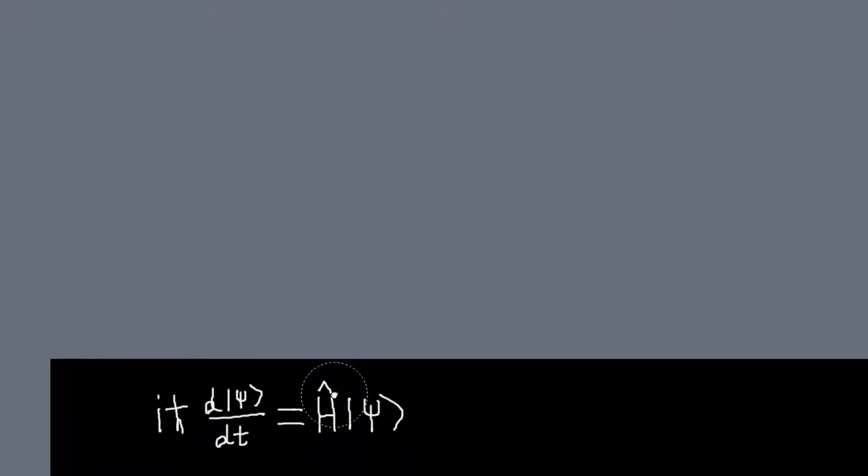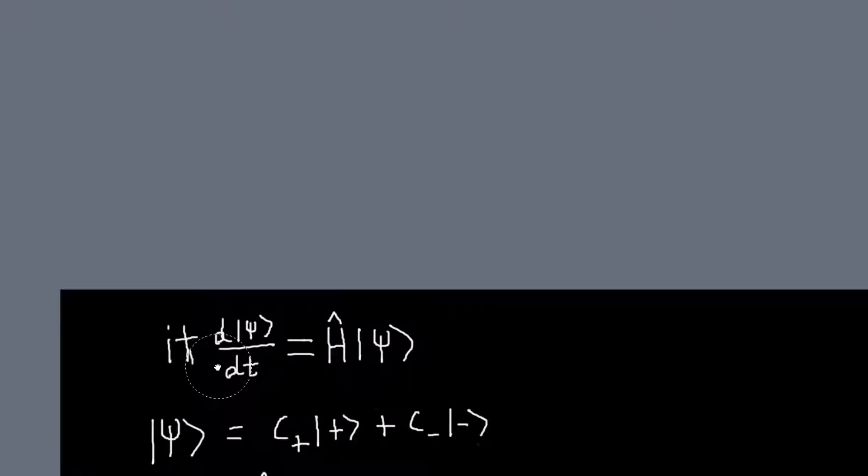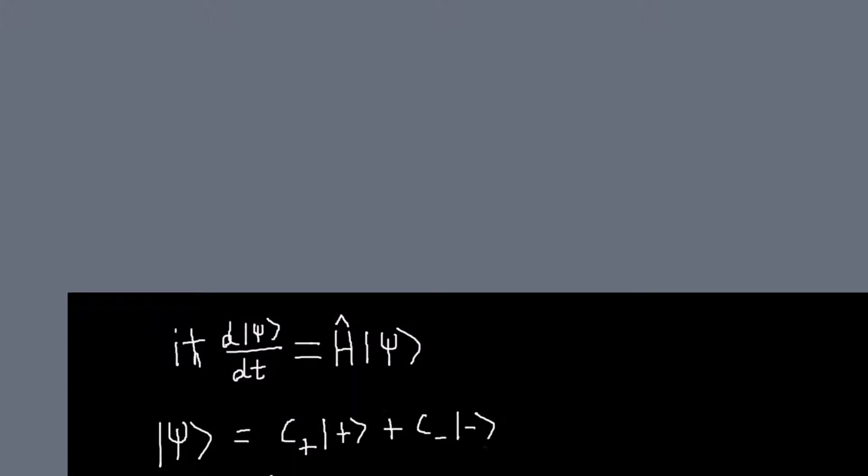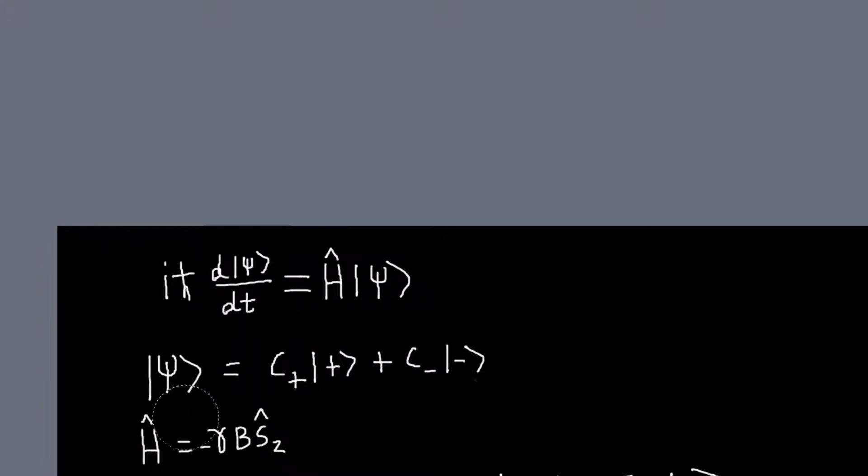What we've been doing is expanding our state ket in terms of the eigenstates of the Hamiltonian. For example, in the problems we've been doing, we had our state ket expanded in terms of these sc eigenkets, and then our Hamiltonian has just been proportional to the sc operator. And since the Hamiltonian is proportional to the sc operator, the eigenstates of the Hamiltonian are just going to be the eigenstates of the sc operator.